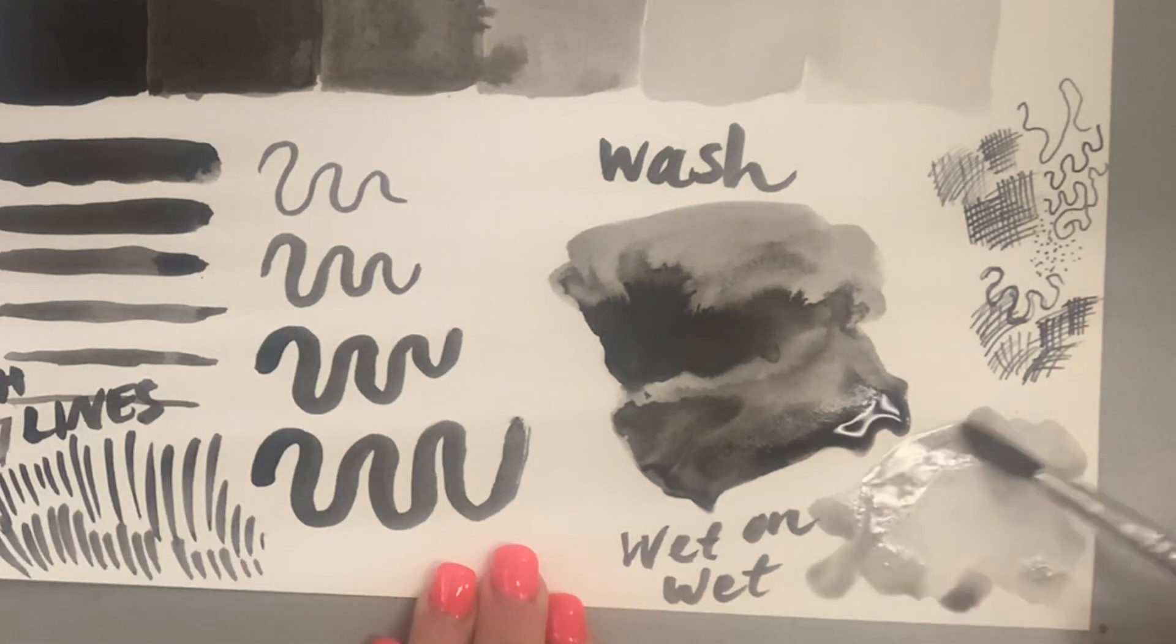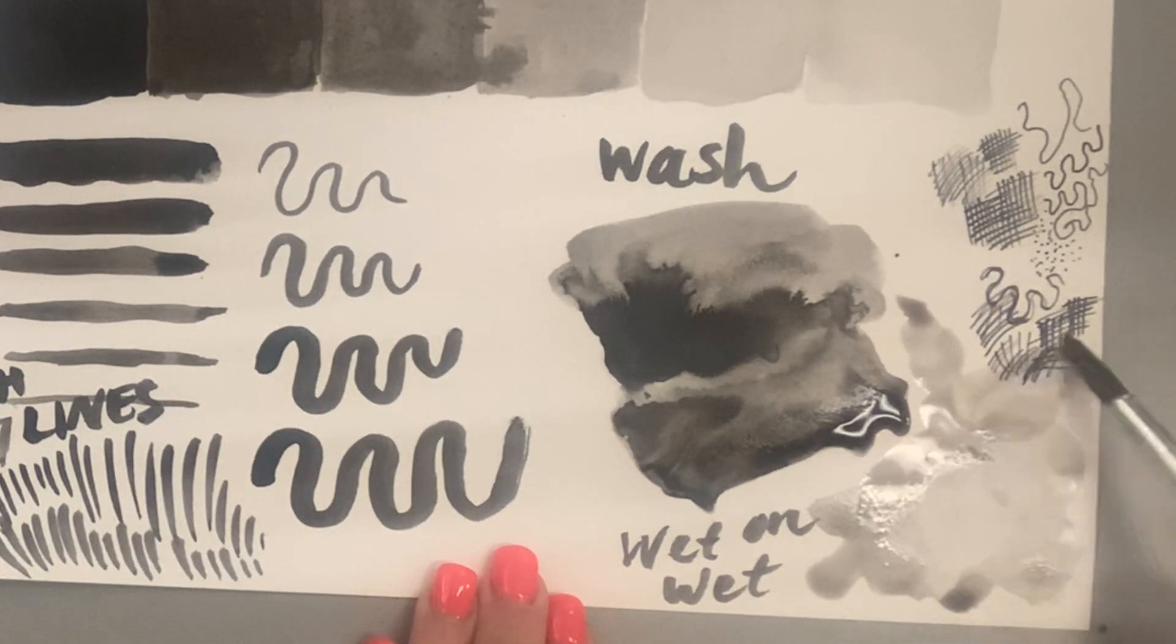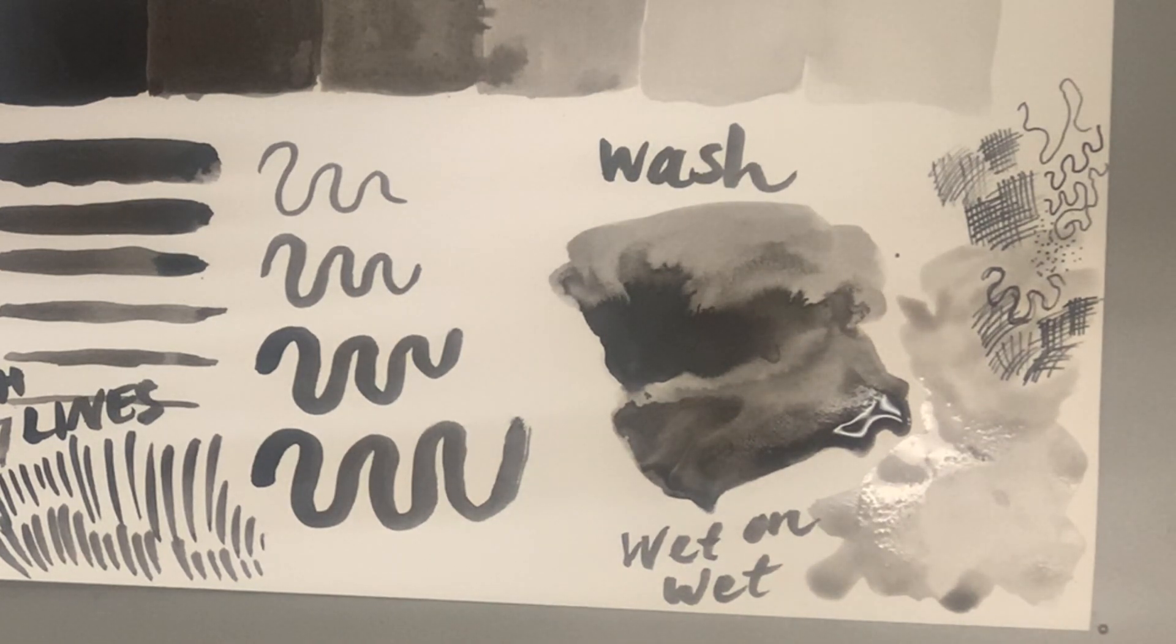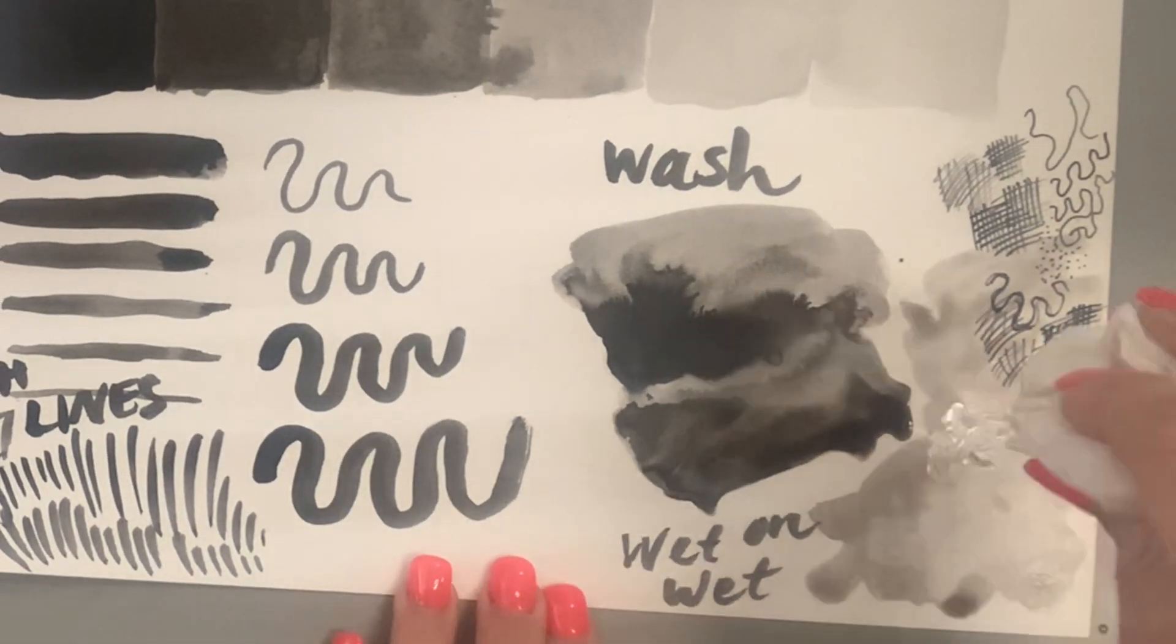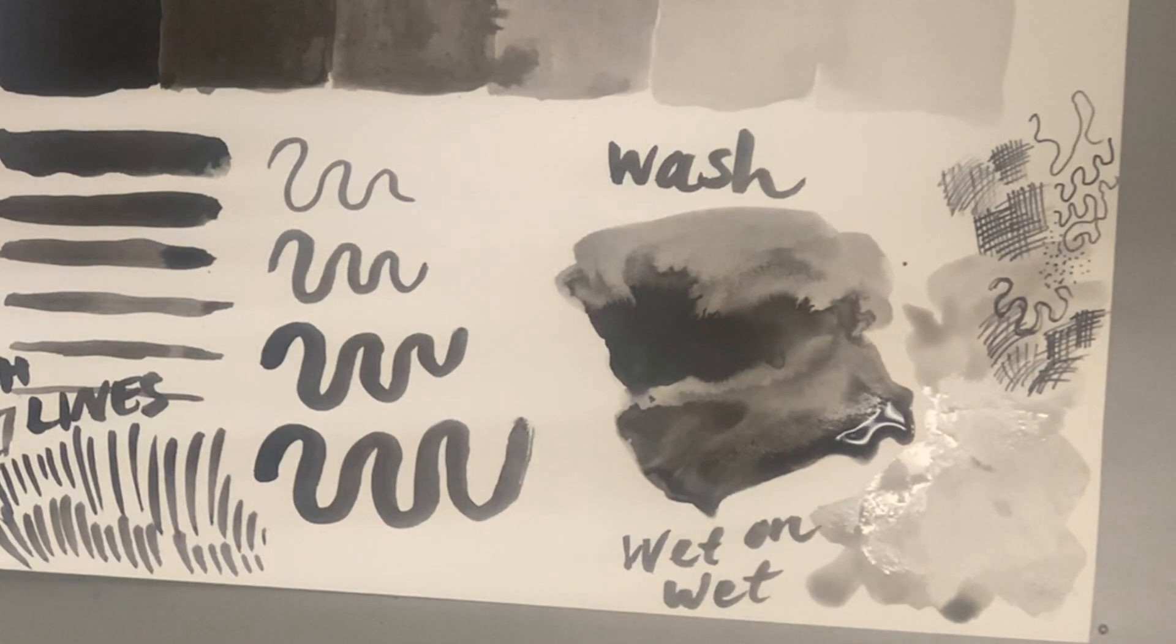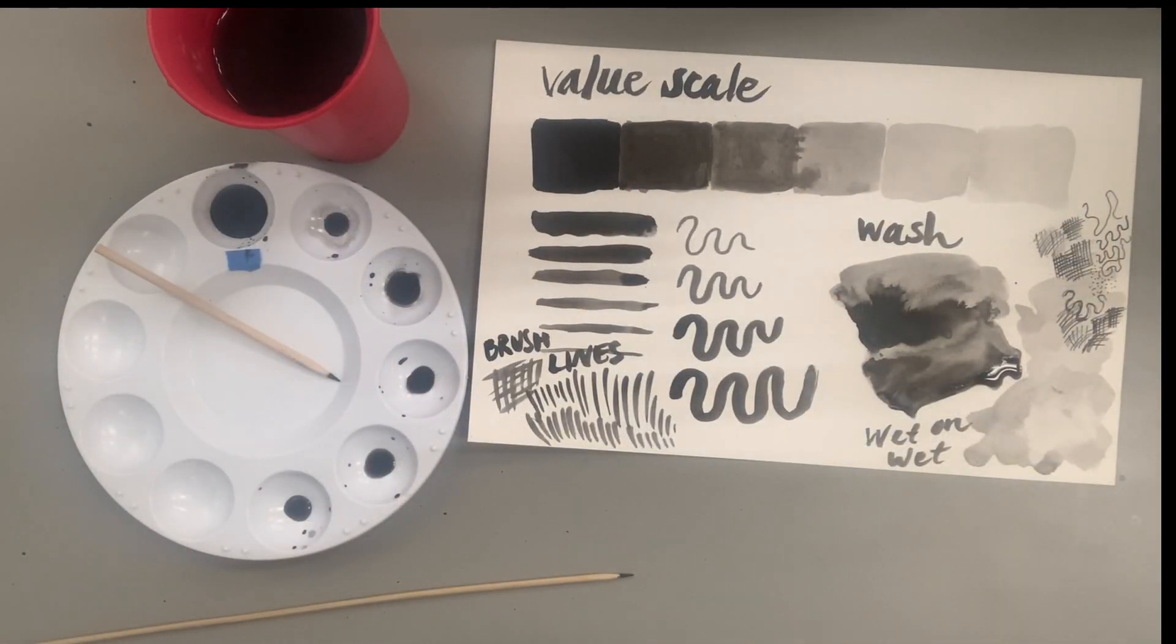If you accidentally, say when you're making your value scale, apply too much water or ink, you can pull the water, pull the ink. And you can see, once your ink dries you can go over it - it's water soluble, but when it dries it sets. So this is a fun technique to create texture depending on what your work of art is going to be.